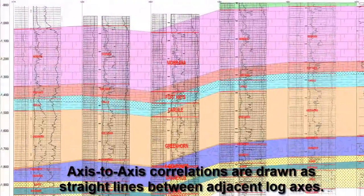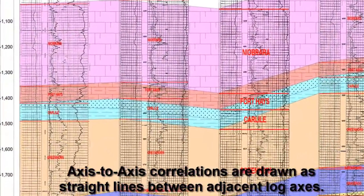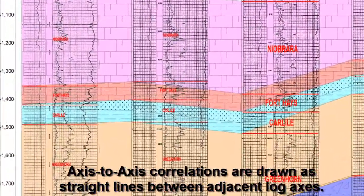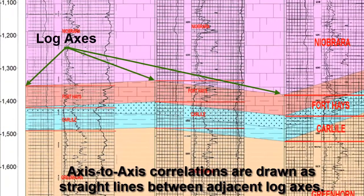Axis-to-axis correlations are drawn as straight lines between adjacent log axes.